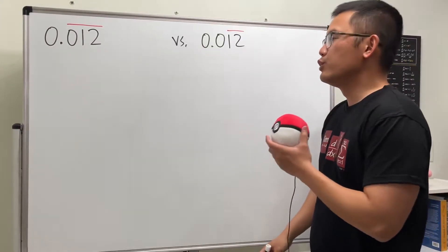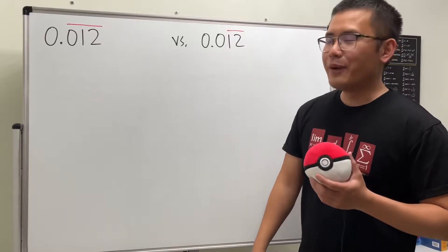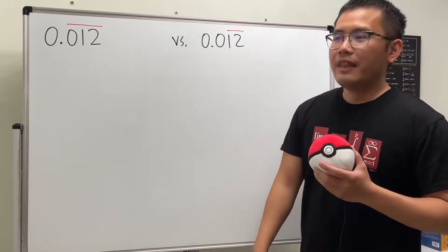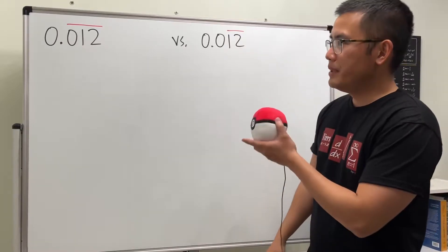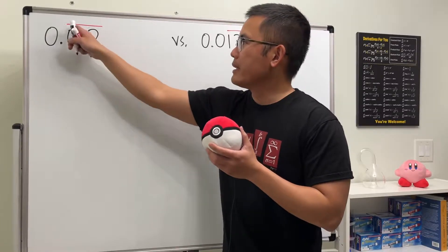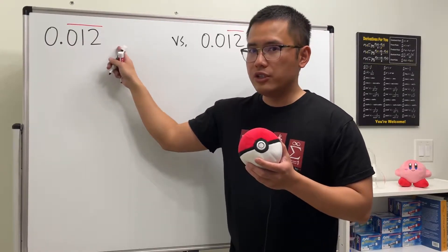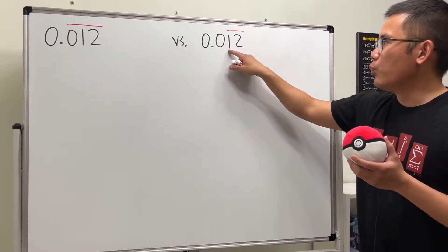Let's see how we can convert these two repeating decimal numbers to fractions. For the first one, we have 0.012, but the bar is over all three digits. And for the second one, we see that the bar is only over the 1 and 2.